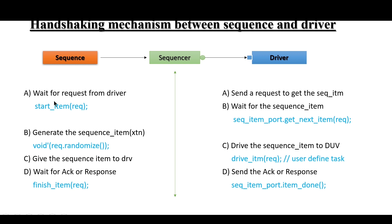After getting a request from the driver, the sequence will generate the sequence item — which is nothing but a transaction — by calling the randomize() method. This is a SystemVerilog predefined method that generates pseudo-random numbers. By calling request.randomize(), it generates the random transaction data. It then gives the sequence item to the driver and waits for the acknowledgement or response from the driver by calling finish_item(), providing the request object within parenthesis.